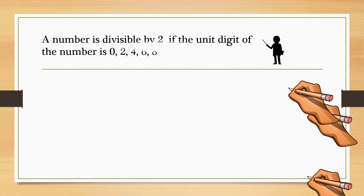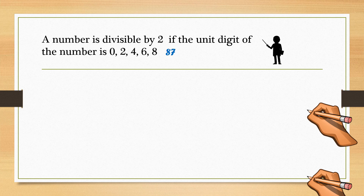A number is divisible by 2 if the last digit of the number is an even number. 87,654 is divisible by 2 because the last digit is an even number. 17,895 is not because the last digit is an odd number.